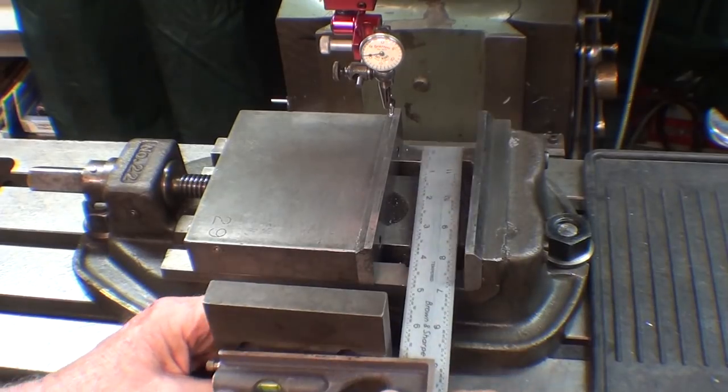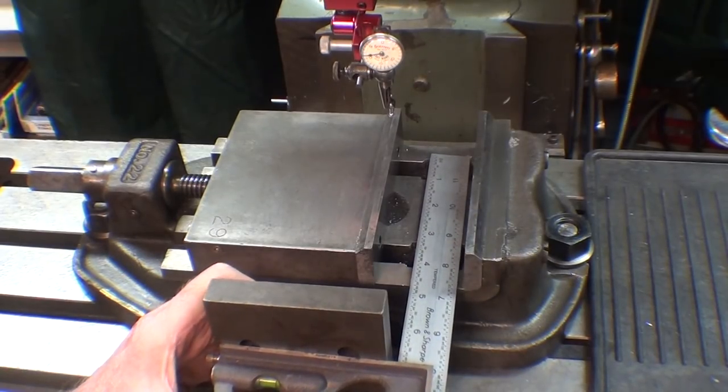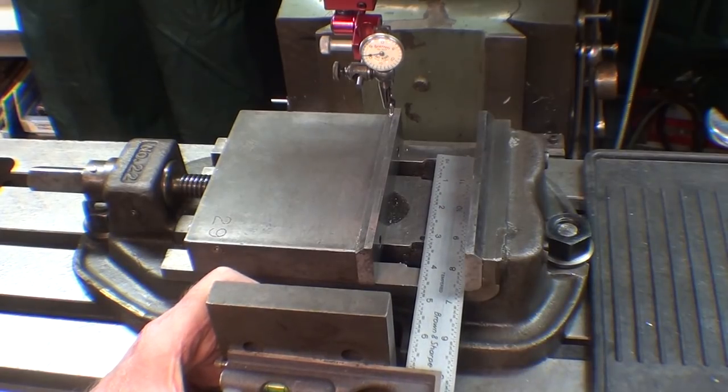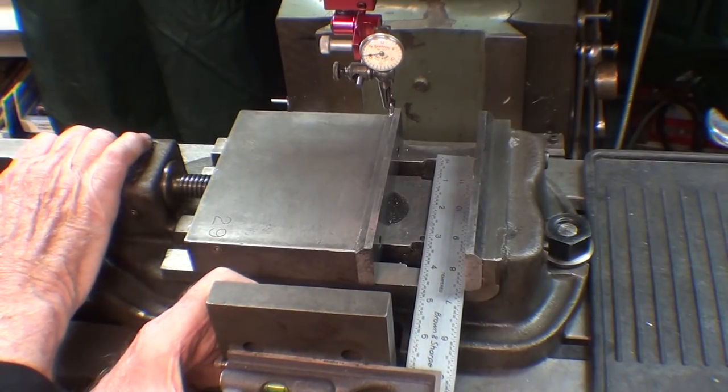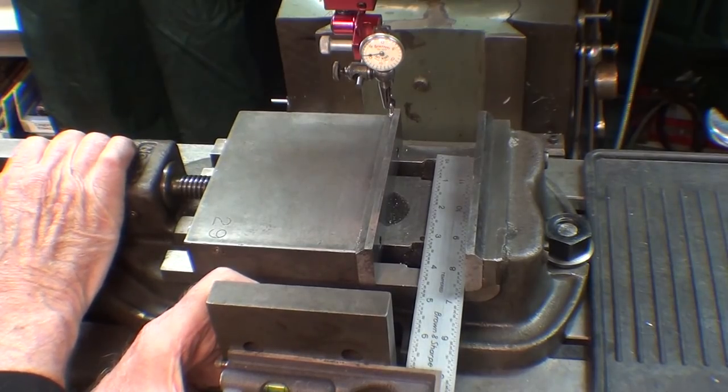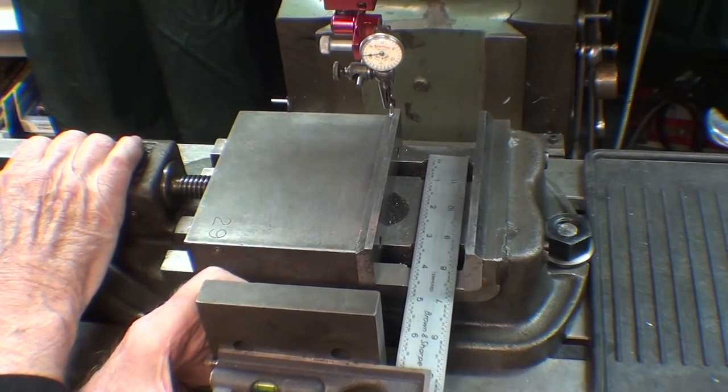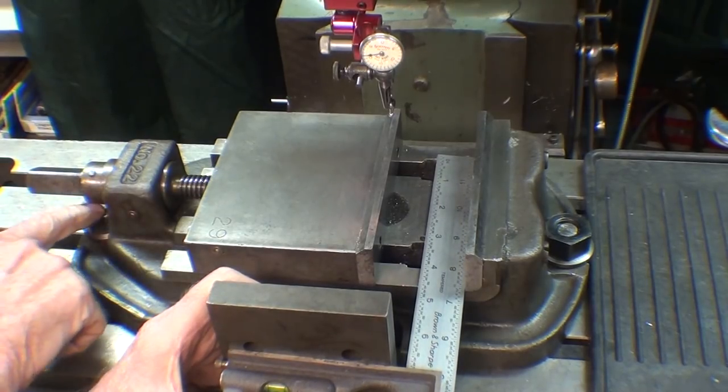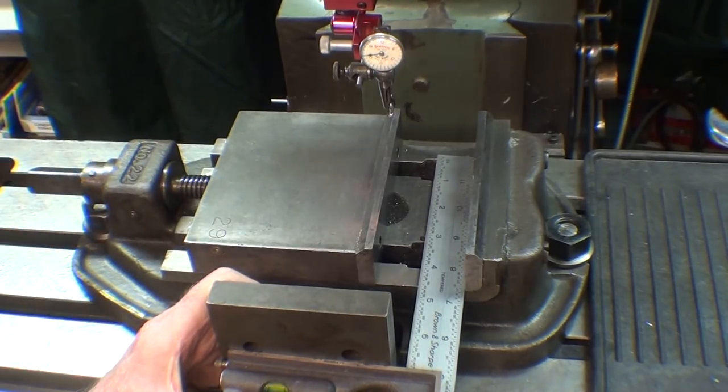And then a Brown and Sharp square and I'm bringing that up against the fixed jaw and swinging the vise until it appears to be square. That's pretty good. Now I will snug this and we'll check it with the indicator and correct it. I'm sure it will need some correction.